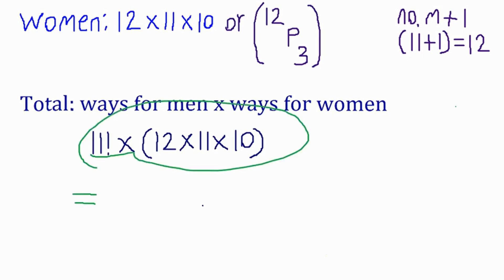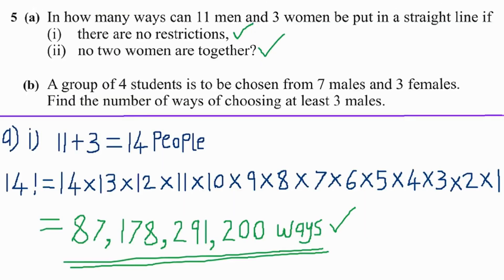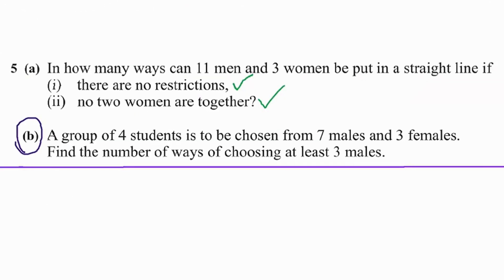When you consider the calculations, it gives the value 5,269,017,600 ways. This is how you easily score marks in the exam. Now let's go to part b, which states: a group of four students is to be chosen from seven males and three females — find the number of ways of choosing at least three males. The total number of students to be chosen is four.